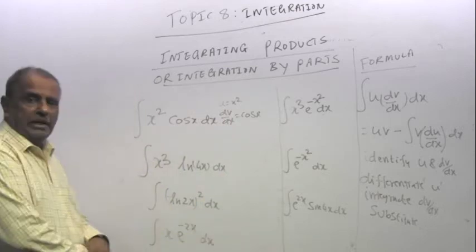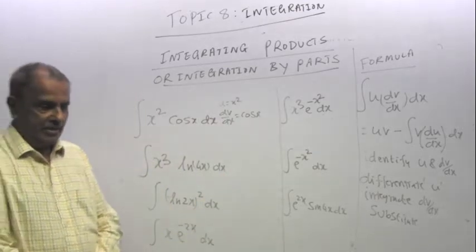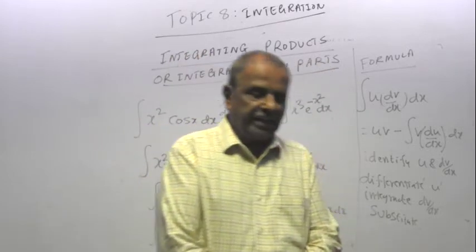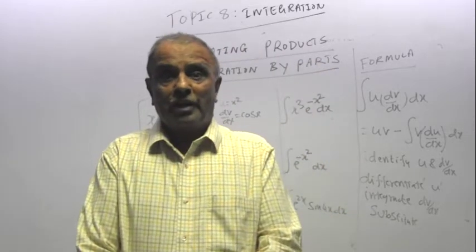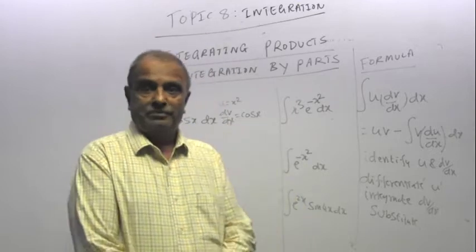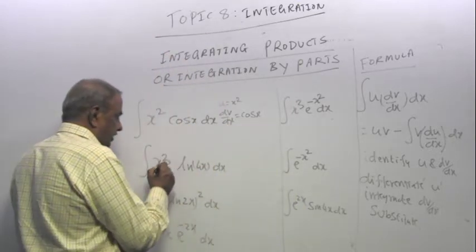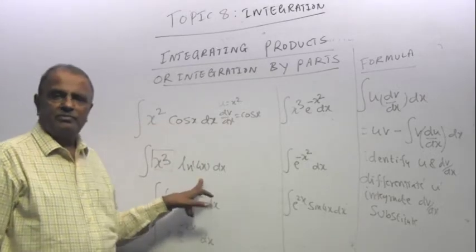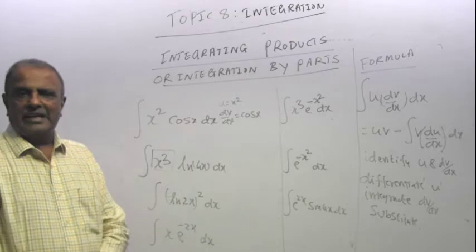You cure the patient. That means get rid of the integral sign. The disease there is the integral sign. So therefore, here you say x squared is u, dv/dx is cos x. When I differentiate x cubed, I get 3x squared. When I differentiate 3x squared, I get 6x. When I differentiate 6x, I get 6.